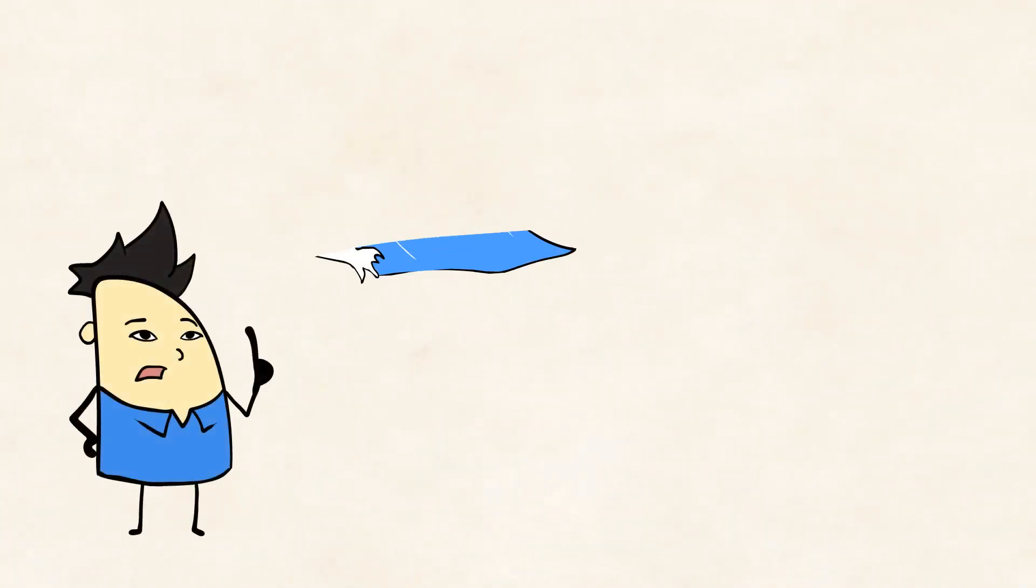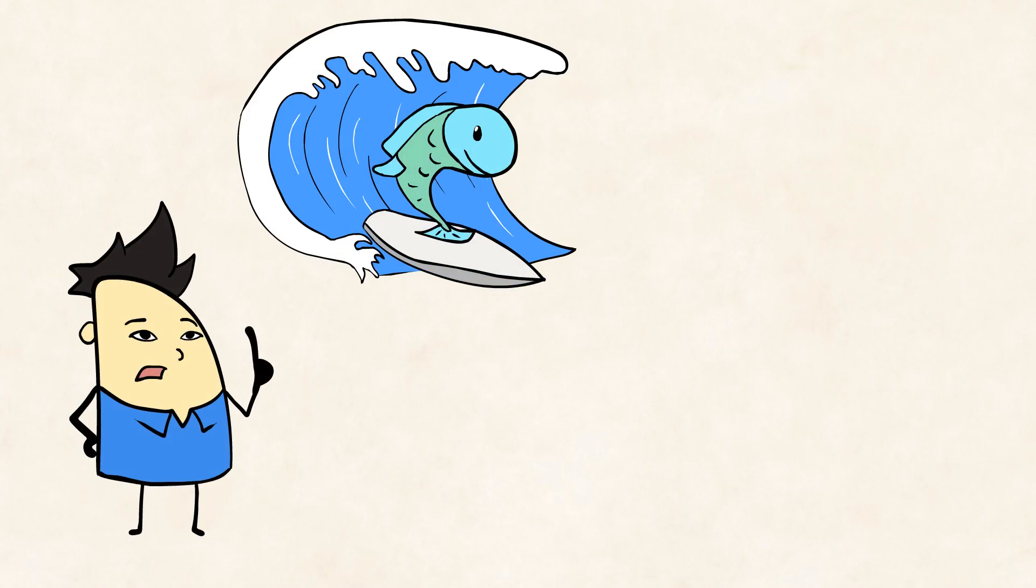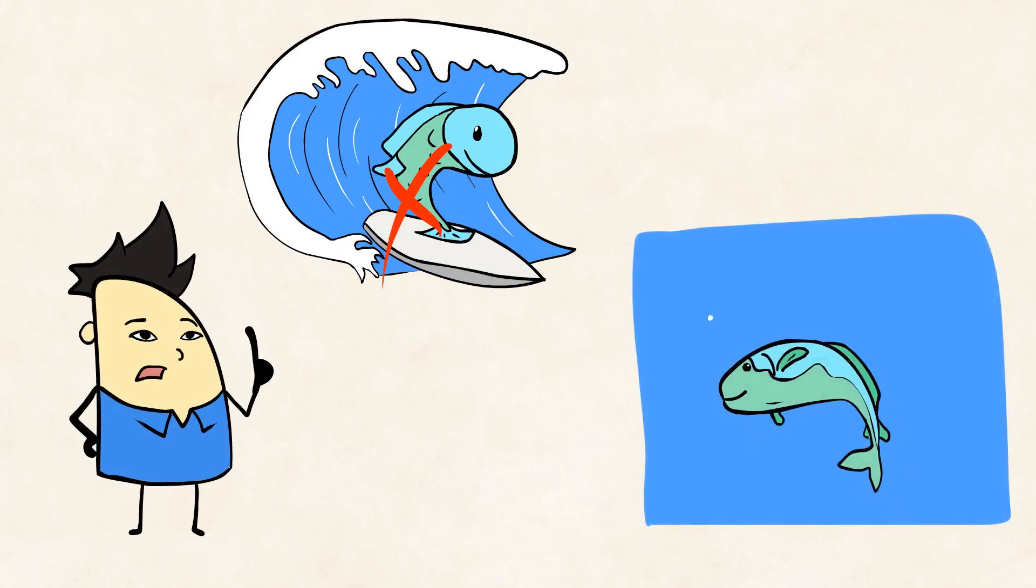Now think about our friend, the fish. Of course, a fish cannot actually surf. But a fish also cannot be out of the water longer than a few seconds, because fish need water to breathe. Fish breathe by taking water into their gills and using that water for oxygen. This means a fish would only have a few seconds out of the water before he died.